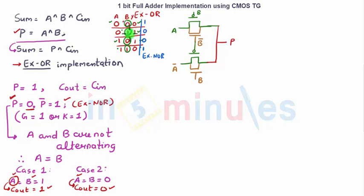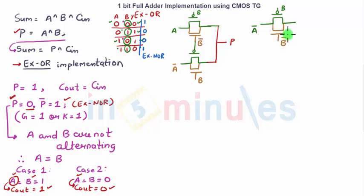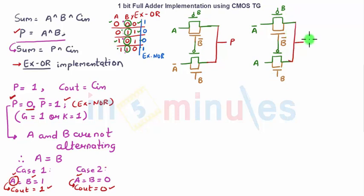For XNOR, when B is 0, the output is equal to A_bar. When B is 0, A_bar comes at the output. Let us connect an NMOS in parallel — we have done this previously — and this will have input B_bar. When B is 1, the output is going to be A. So for PMOS with B_bar, output is A. This is nothing but my propagate_bar signal.